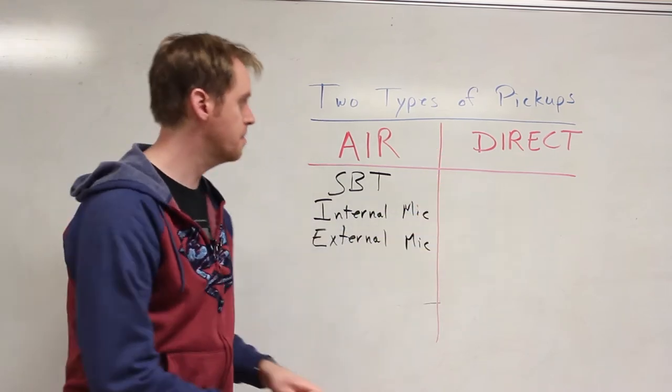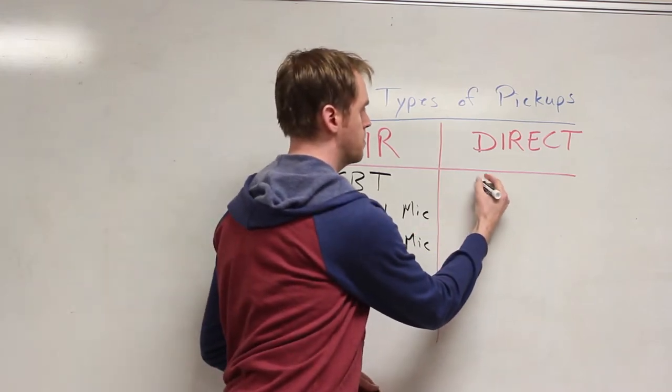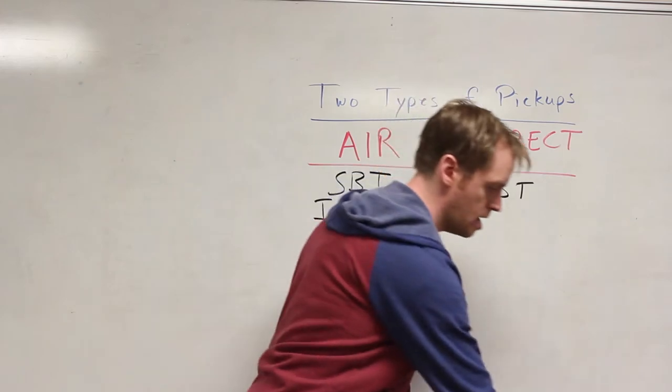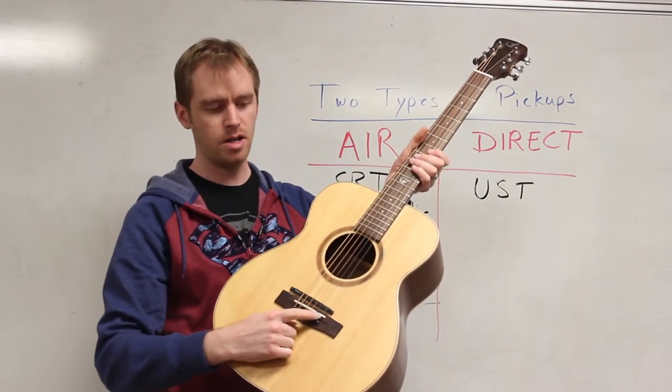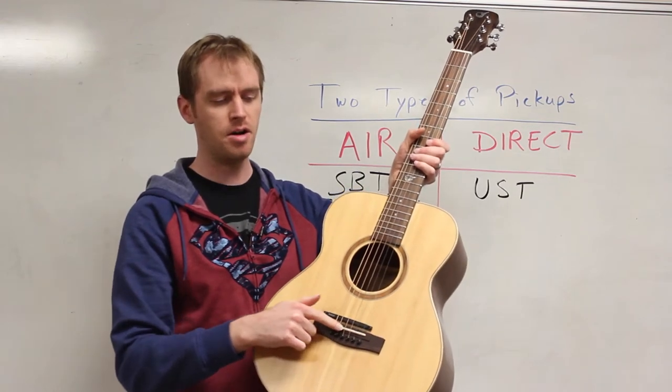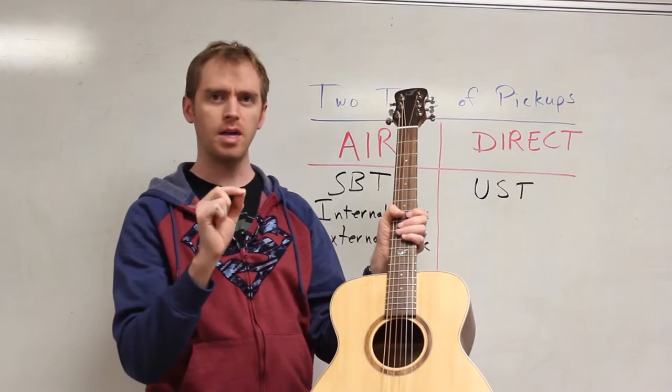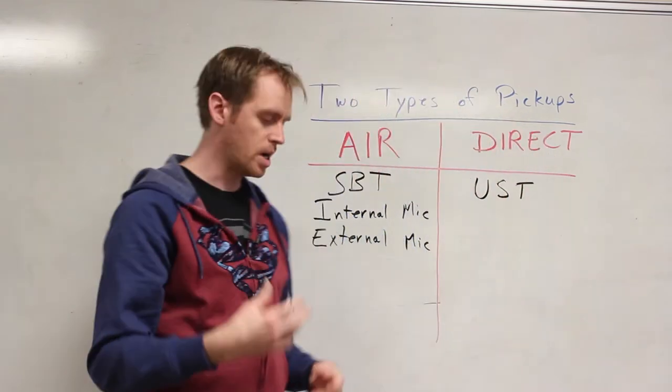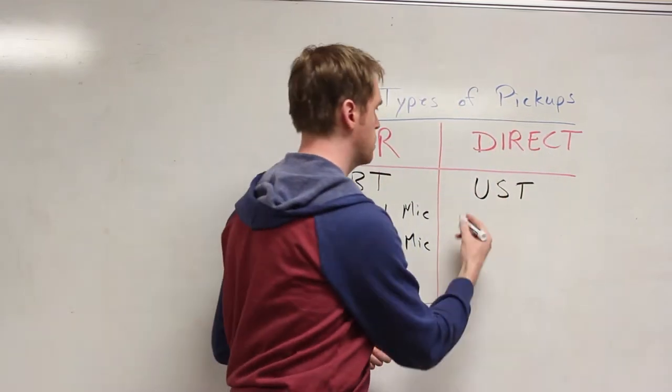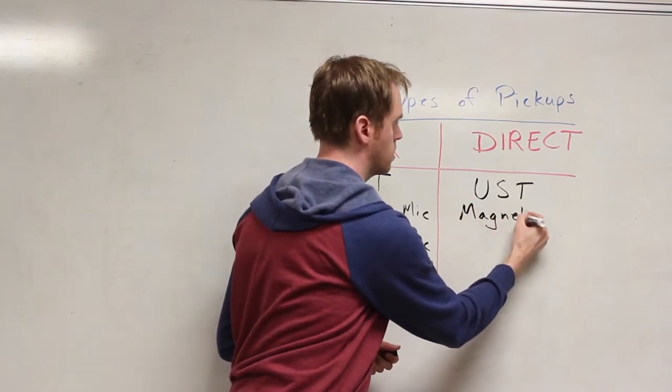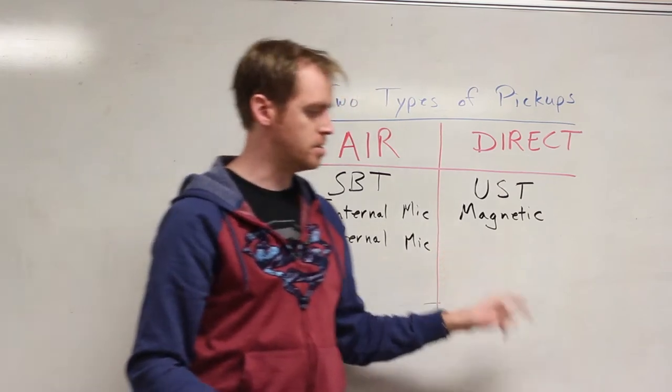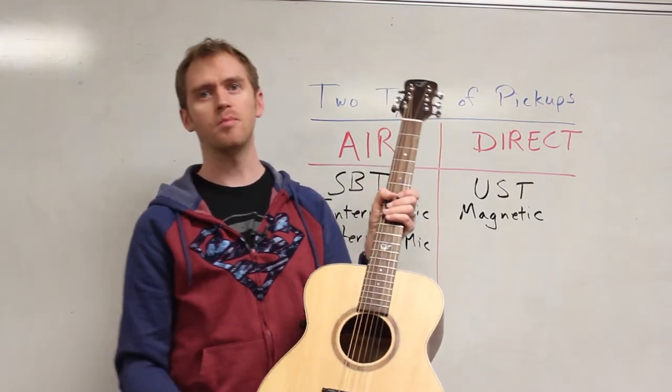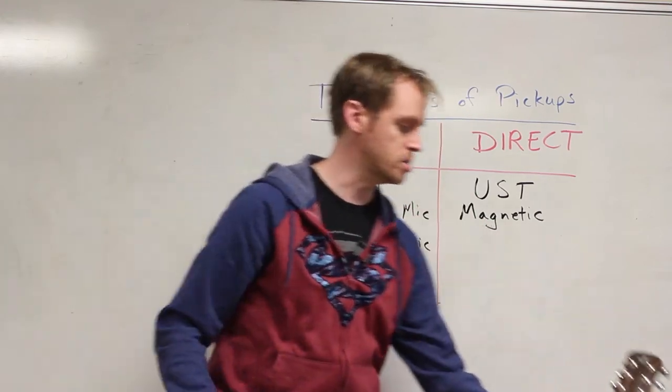For our direct signal pickups, those are going to be UST, which stands for under saddle transducer. What that looks like is it actually goes right under the white piece, the saddle of the guitar. There's going to be a little coax-type cable or a little strip of metal. So it's a pickup right under that, and that gets a very direct sound. And then our final type is the magnetic sound hole pickup, which is a pickup that goes right in the sound hole here. It acts just like a pickup on an electric guitar, and it's grabbing the sound of the strings quite directly.